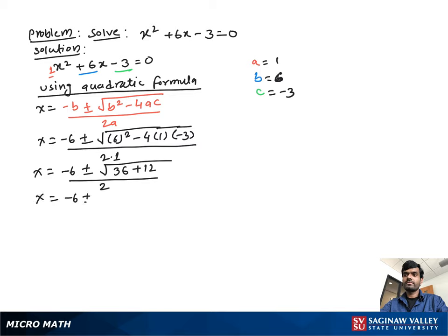Then we get x equals negative 6 plus or minus square root of 36 plus 12, which is 48, over 2. Then we can write x equals negative 6 plus or minus square root of 48, as 4 times square root of 3, over 2.